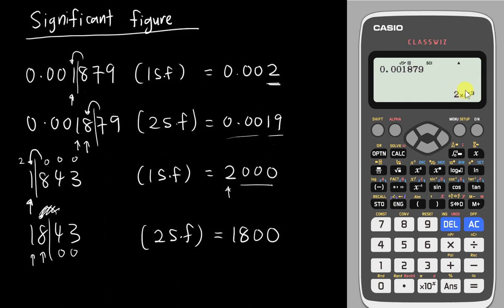The calculator will display in standard form. If you want it in decimal form, you need to use the ENG button — that's the Engineering Notation. This button changes your number into powers of 10 that are multiples of 3 (like 3, 6, 9, or negative 3, negative 6, negative 9). Since this result is 10 to the power of negative 3, you want to bring the power to 0. When the power is negative, use Shift ENG. After pressing Shift ENG twice, you get power of 0, and the answer is 0.002.